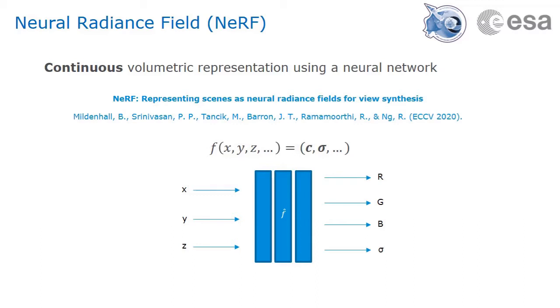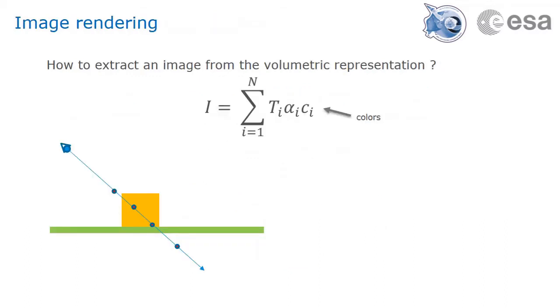The volumetric representation network is a simple feed-forward multilayer perceptron that takes as inputs the spatial coordinates of a point and provides as outputs the color and opacity. In order to extract an image from such a representation, we perform ray marching for each pixel. Starting at the camera position, we sample along the ray at different locations throughout the scene. We then run the x, y, z coordinates of each sample position through the network and extract the color and opacity values.